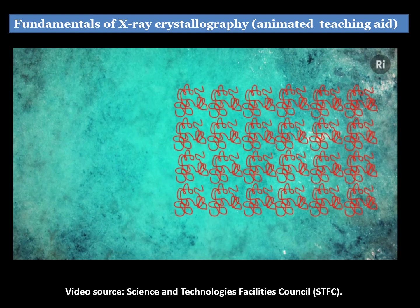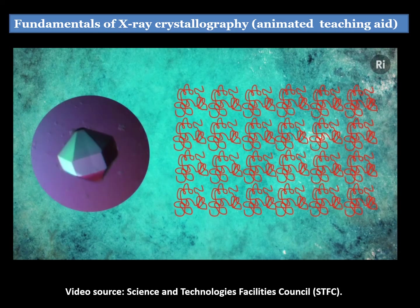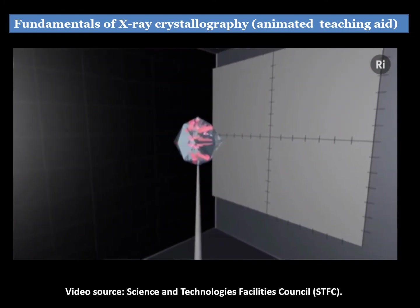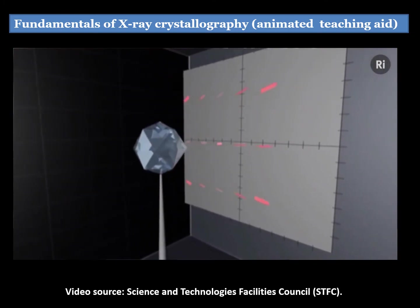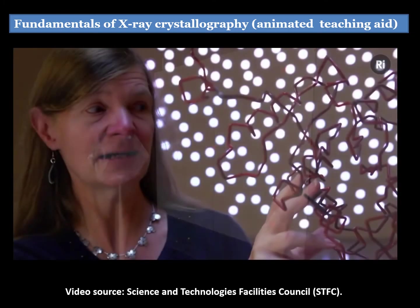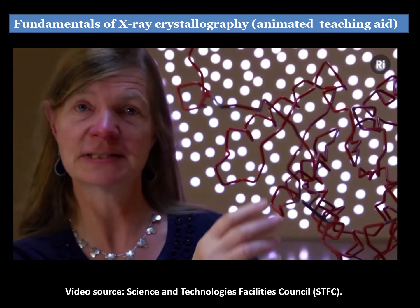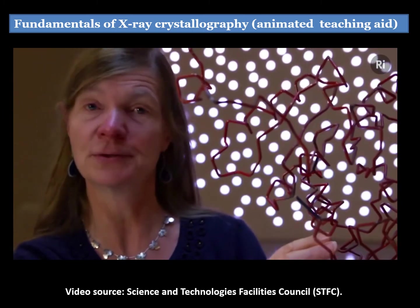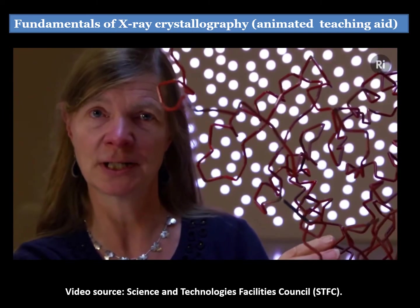However, if I can get the protein molecules to line up in an ordered array, such as in a crystal, where they're all lined up in the same orientation, then when the X-rays scatter from the crystal, I can get enough information — the signal is strong enough — for me to get the three-dimensional structure of the protein.